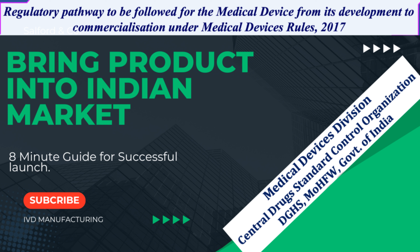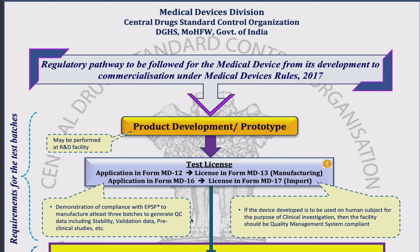I am going to focus on the regulatory pathway as per the Indian CDSCO. The regulatory pathway is mainly divided into three phases for a particular product. The first phase is the requirement to manufacture test batches. The second phase is to conduct a clinical investigation study on investigational medical devices if applicable. The third phase is the commercialization phase.